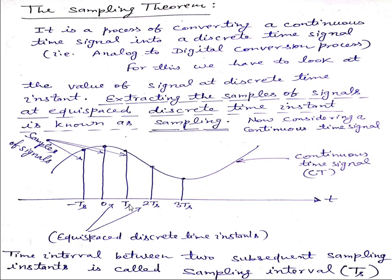The primary concern in sampling is to select the sampling rate, that is, the number of samples per second that preserve the information contained in the continuous time signal.